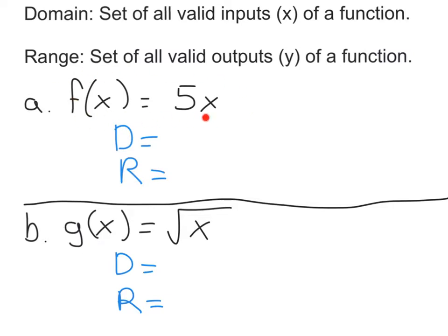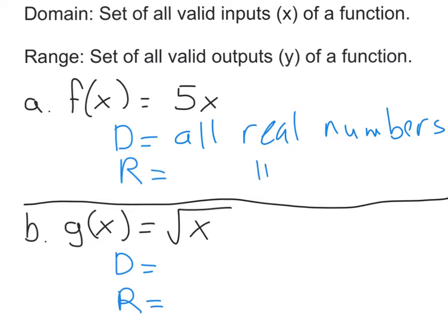Part A is f of x equals 5x. For the domain, all you're doing is multiplying by 5, and you can multiply any number by 5. So all inputs are valid — the domain is all real numbers. The same is true for the output: since you can plug anything in and it's multiplied by 5, you can get anything out — any negative, zero, any positive. So the range is also all real numbers. This is true of most lines we graphed in chapter 3.